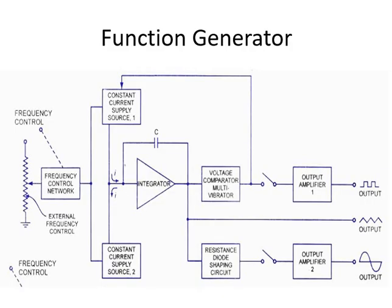There may be a question on the difference between analog and digital multimeter. The next topic is the function generator. A function generator is a signal source capable of producing different types of waveforms as its output signal. The most common output waveforms are sine waves, triangular waves, square waves, and sawtooth waves. The frequencies of such waveforms may be adjusted from a fraction of hertz to several hundred kilohertz. The block diagram of the function generator basically consists of a frequency control network, constant current supply sources 1 and 2, integrator, voltage comparator, multivibrator, resistance-diode shaping circuit, and output amplifier.